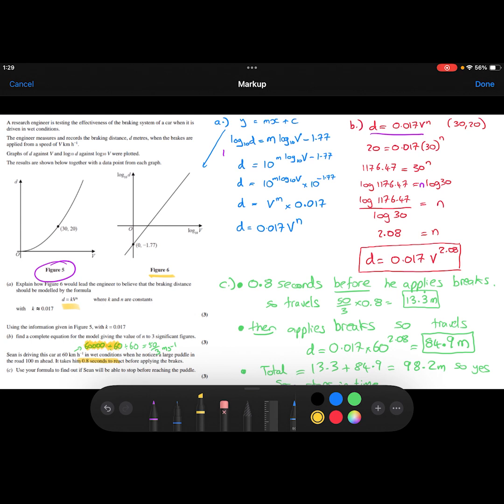And then if I divide by 60 again, it tells me how many metres he will travel in one second. So Sean is traveling at 50 over 3 metres per second. That is his speed in metres per second. And he's traveling at that speed for 0.8 seconds. So I'm going to do the speed times the time to work out the distance that he travels in those 0.8 seconds. So he travels 13.3 metres before he applies the brakes.